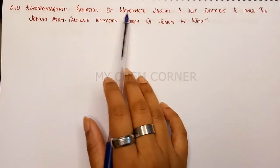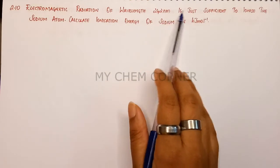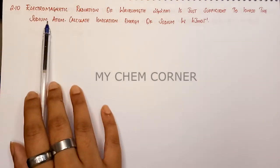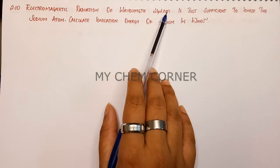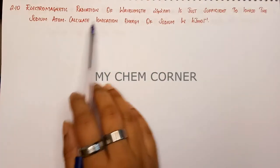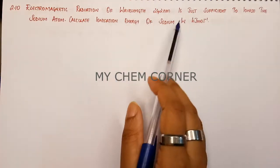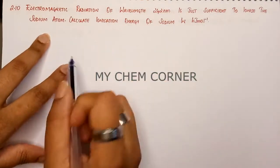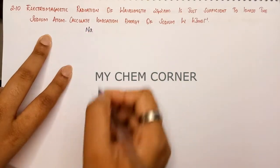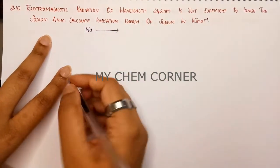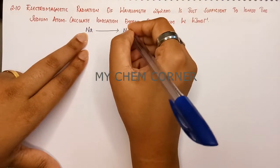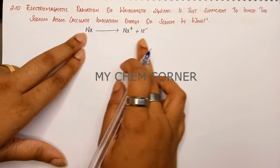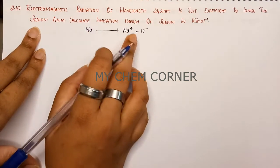The question states that electromagnetic radiation of wavelength 242 nanometers is just sufficient to ionize the sodium atom. To ionize means to remove an electron from the sodium atom. So we have a sodium atom, and when we ionize it, we pull out an electron — it becomes Na-plus and one electron is released. This is the ionization of sodium atom.